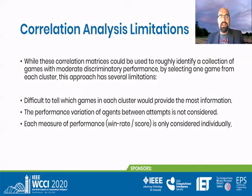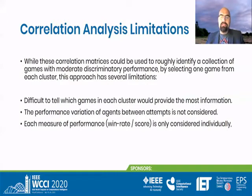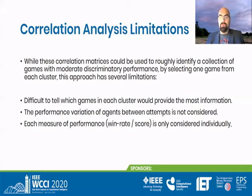But the correlation analysis has some shortcomings. We could go in and pick a game from each of these clusters to capture the various different aspects, but it's still difficult to tell which game in each cluster is actually providing the most information. The other thing we're not considering here is how the performance varies between the different attempts an agent makes — over on average 1,300 playthroughs, does the agent always score roughly the same or are the scores all over the place? We only looked at the average win rate and the average score individually. Could we actually combine these two? And if so, how do we project these two values onto a comparative measure?